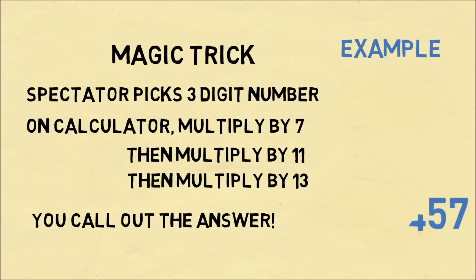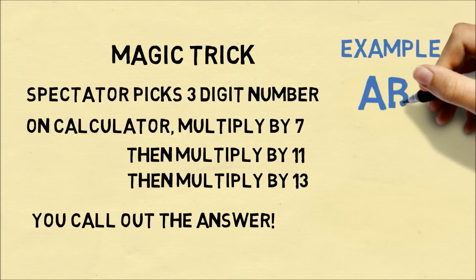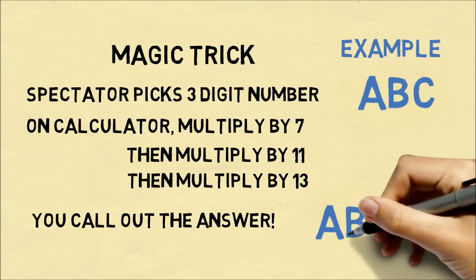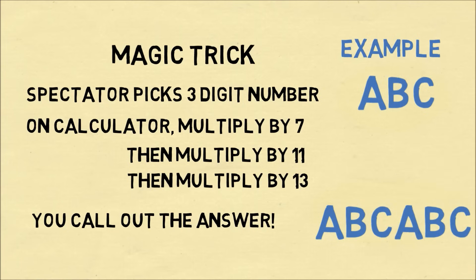So this is a trick you can only do once. The pattern is very simple. If the number is ABC, after multiplying by 7, then 11, and 13, the answer will always be ABC, ABC.